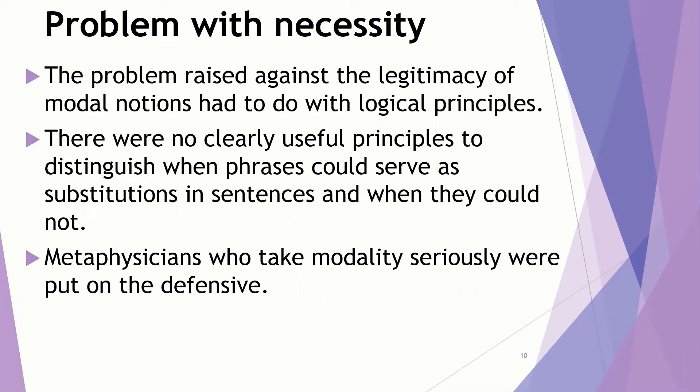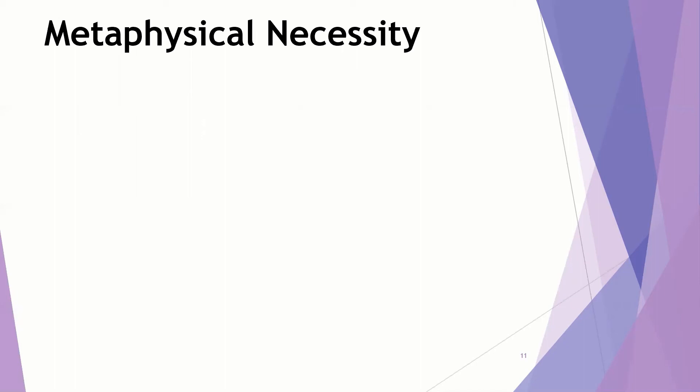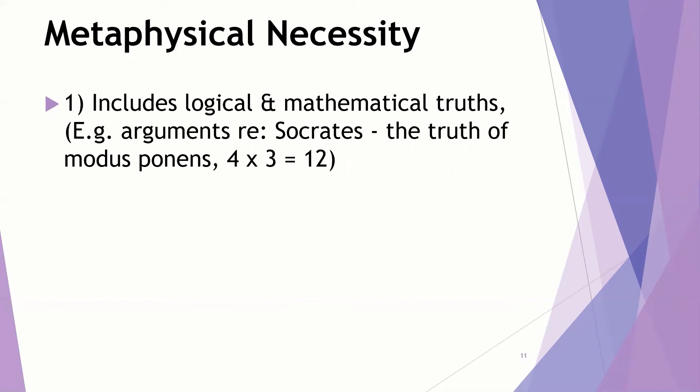This set up the projects to clarify metaphysical necessity that began in the mid to late 20th century. Metaphysical necessity, what does that involve? Without getting into particular theories, let's set this up, and in part two we'll start talking a bit more about how theories might go. Metaphysical necessity as a whole, these include logical and mathematical truth. These include the previously mentioned argument about Socrates. If Socrates is a man and all men are mortal, then Socrates is mortal. That statement would be a logical truth, the truth of modus ponens, the truth of any argument that follows the P, if P then Q, therefore Q. That is a metaphysical necessity. And any mathematical truth, 4 times 3 equals 12 will suffice as an example.